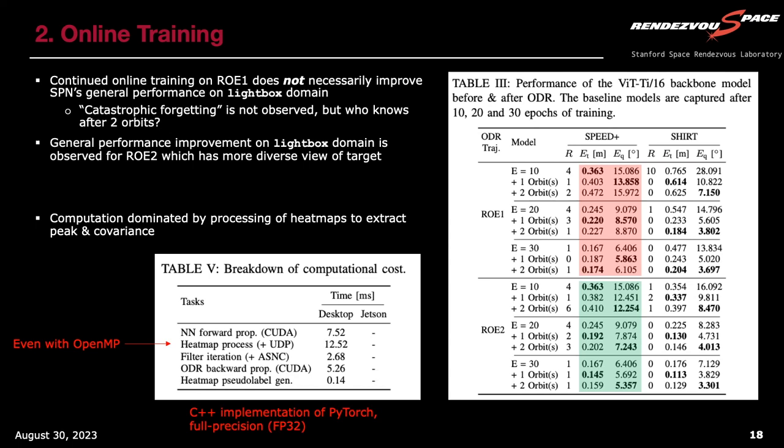One important note: we've only tested this for up to two orbits, so we don't know what happens beyond that, especially for RE1. It is possible that training on the same set of images for too long causes the network to forget how to perform pose estimation on different viewpoints — a form of catastrophic forgetting. This is something we need to check over a much longer time period.